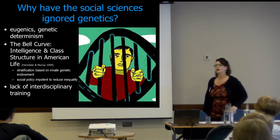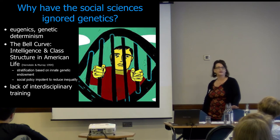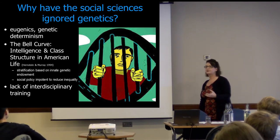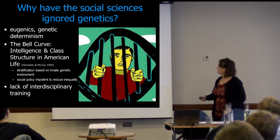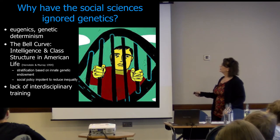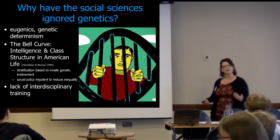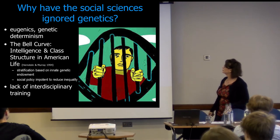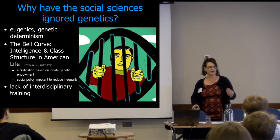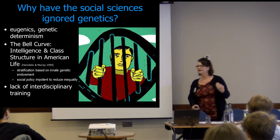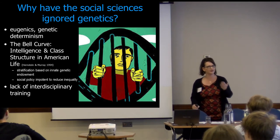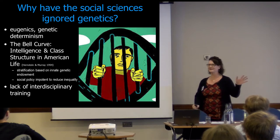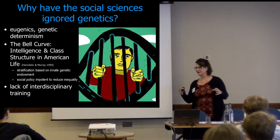So why have we avoided this for so long? It has a very dark history when you think about genetics and eugenics. Some people have used genetics as a basis to make claims — I'm sure some of you have heard of the bell curve, arguing that social stratification is based on innate genetic endowment. That would make all of us sort of useless as social scientists, because you'd never be able to have a policy intervention if everything's genetic. I hope to convince you by the end that not everything is fully genetic — it's much more complicated.